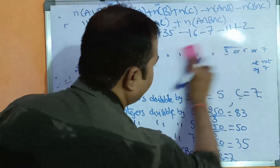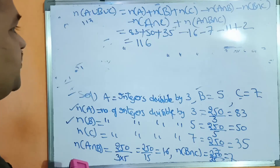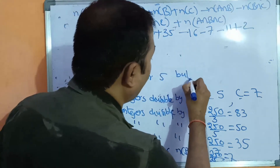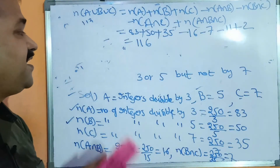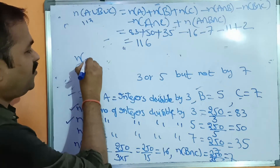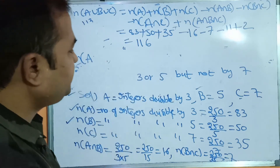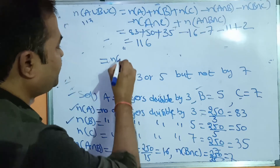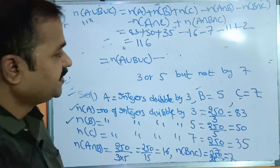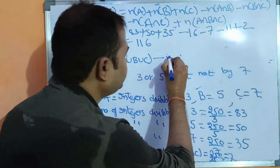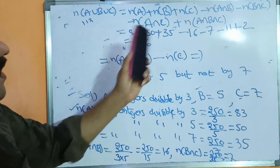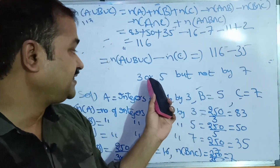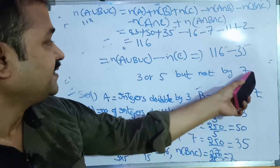Now let us solve the next problem: number of integers divisible by 3 or 5 but not by 7. The formula is n(A∪B∪C) minus n(C), since 7 means C value and we subtract it. So that is 116 − 35 = 81. That is the result for numbers divisible by 3 or 5 but not by 7.